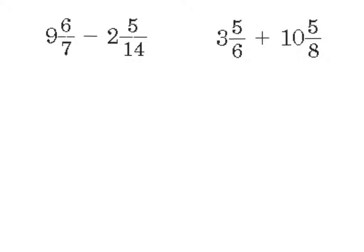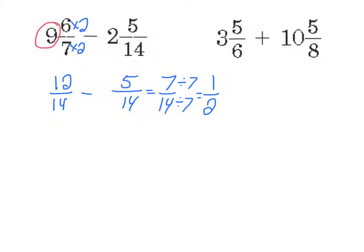Alright, so I'm going to go ahead and do these two problems. 9 and 6 sevenths minus 2 and 5 fourteenths. So first I need to find my common denominator. I'm going to use 14 as my common denominator. To get from 7 to 14 I multiply times 2. So do the same thing here and get 12 fourteenths. My other fraction was already with the common denominator 14, so I don't need to change anything. 12 fourteenths minus 5 fourteenths is 7 fourteenths. 7 fourteenths can be simplified. 7 and 14 both have something in common. They can both be divided by 7. And I get a fraction of 1 half. Now, don't forget, you have to go back and do the whole number portion of the problem as well. 9 minus 2 is 7. So when I put it all together I get an answer of 7 and 1 half.